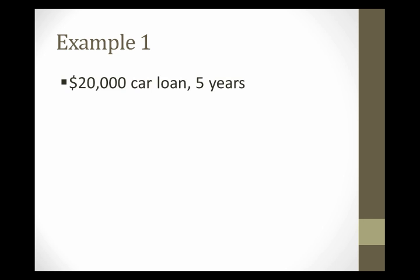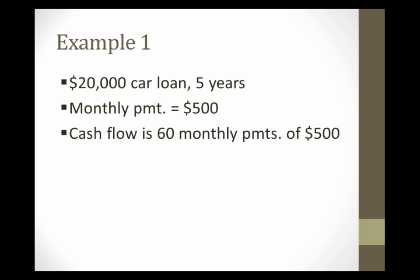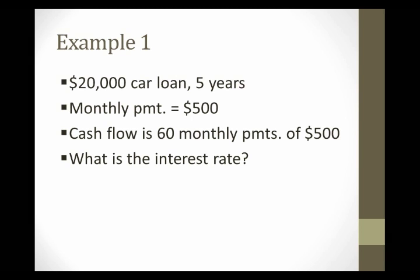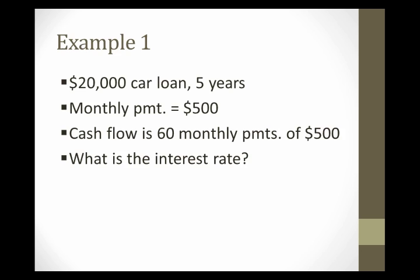Let's look at these three different measures of interest rate in the context of an example. The example is a car loan of $20,000 for a period of five years with monthly payments of $500. So the cash flow here is 60 monthly payments of $500. Our question is: what is the interest rate? Specifically, what is the annual interest rate — the annual cost of financing for a car loan on these terms? We'd start by calculating the monthly interest rate based on the monthly cash flows involved.